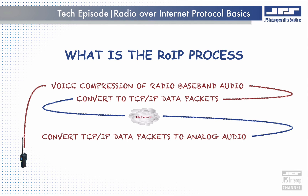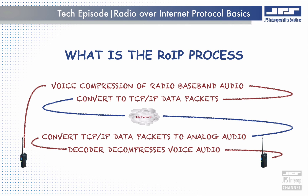Once the ROIP data travels across the network through network switches and routers, it finally arrives at the far end where the ROIP process is reversed. The analog voice information is then deconvolved from the TCP/IP data, the compressed analog voice is decompressed using decoder algorithms — which are the opposite of a vocoder — and finally the resulting voice communication is presented to the donor radio at the far end. All these steps are accomplished using JPS devices, modules, or software applications containing the JPS ROIP algorithms.